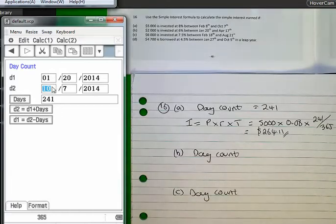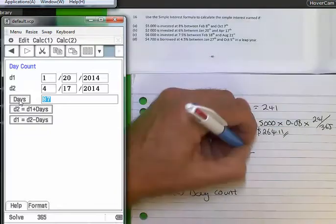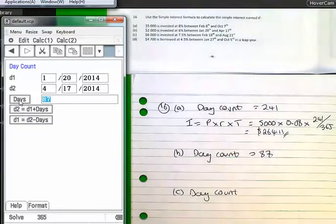And it straddles February, you will end up with a difference. I'm happy to honor that difference if indeed you are using this. When we hit day count, we end up with 87 days. I'll work through for the third one, part C, in exactly the same way.